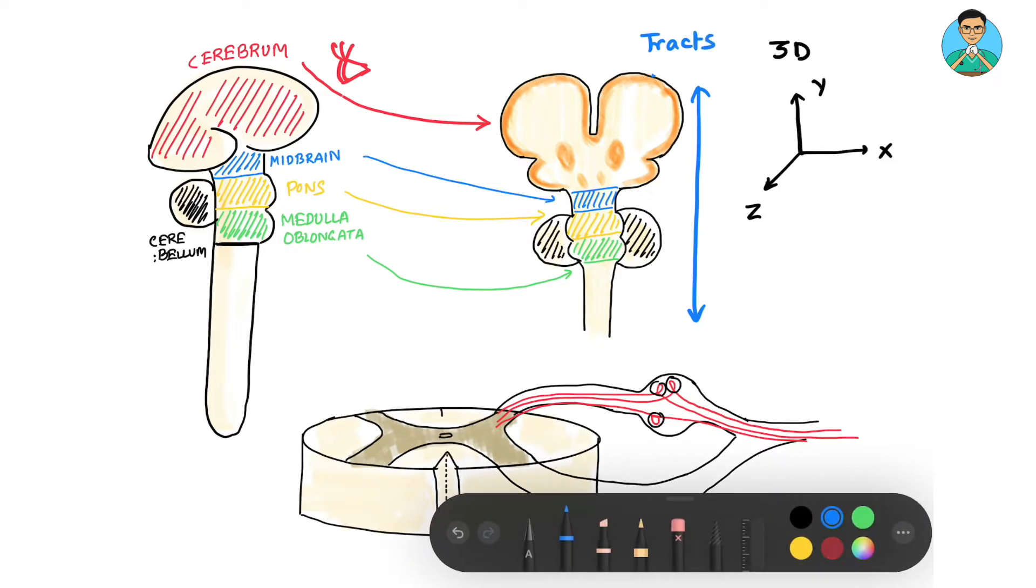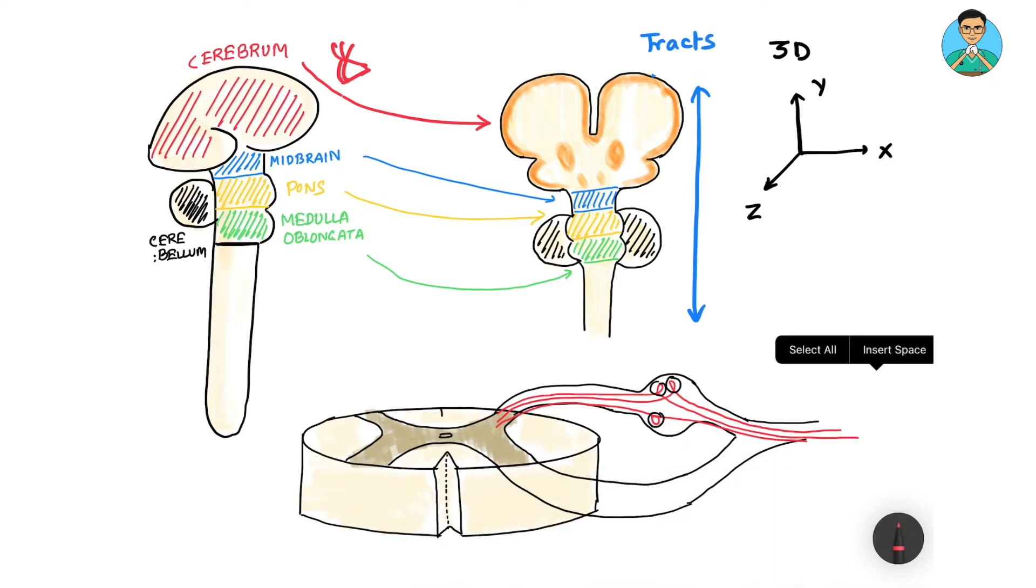Those white matter fibers which communicate in the left to right manner, they are known as commissures.